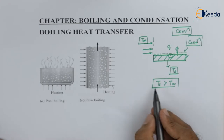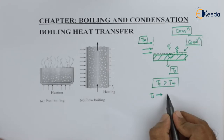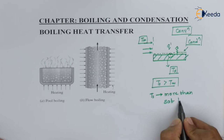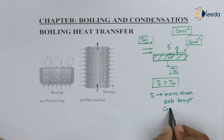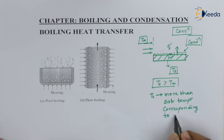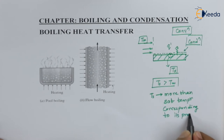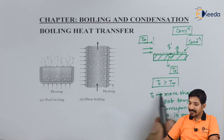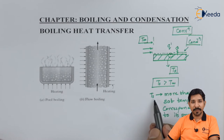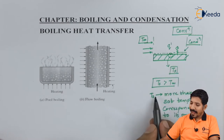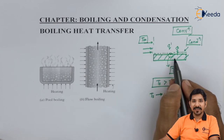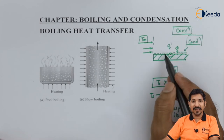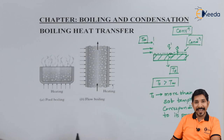So the purpose of explaining this was to make you understand what the saturation liquid line and saturation vapor line mean, and what saturation temperature is. If T_s becomes greater than the saturation temperature corresponding to its pressure, then boiling will surely take place. As T_s increases, initially conduction takes place, then convection, and then boiling.